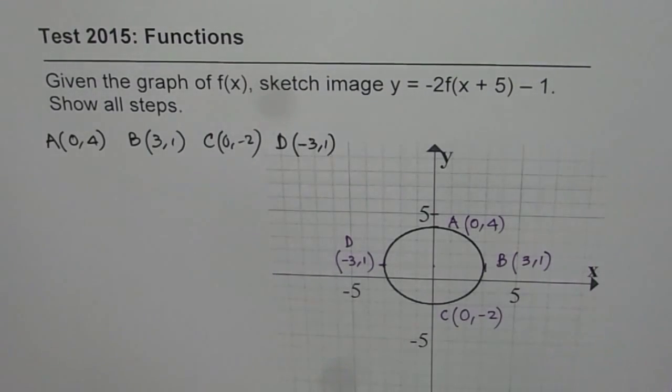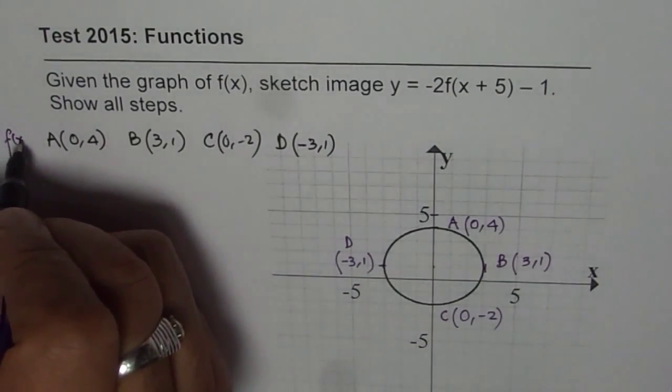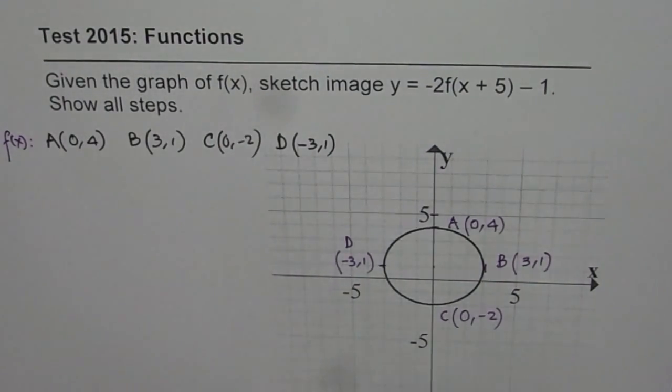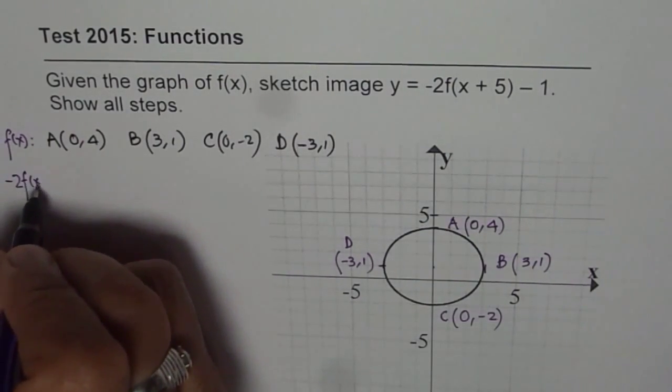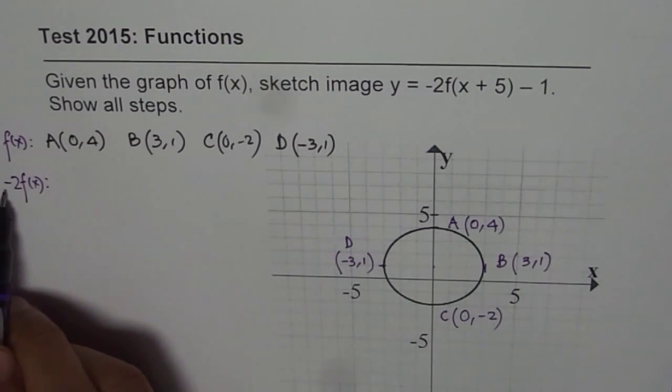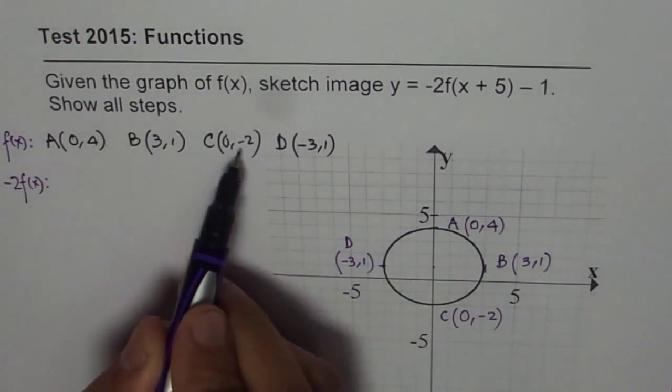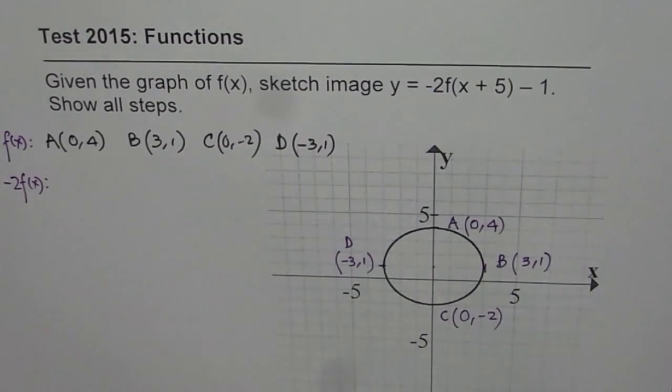So these are the points on the function f of x. Now if we do minus 2 times f of x, then what happens? Minus 2 times f of x will do a vertical stretch by a factor of 2 and a reflection on x-axis. So every y-point really gets multiplied by minus 2. X-points remain same. So that is the effect of this transformation.